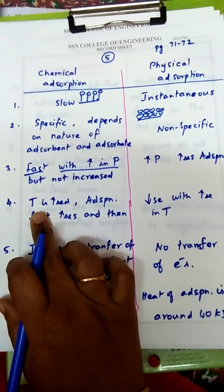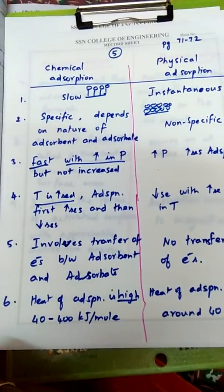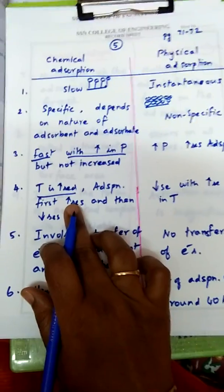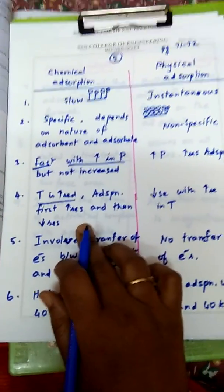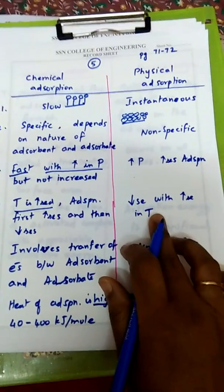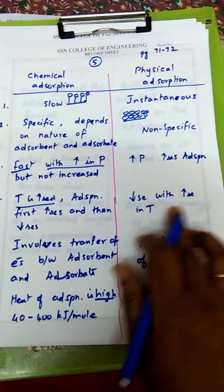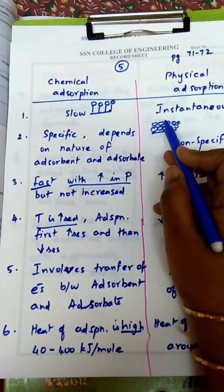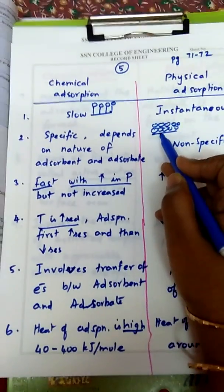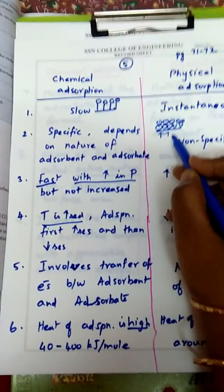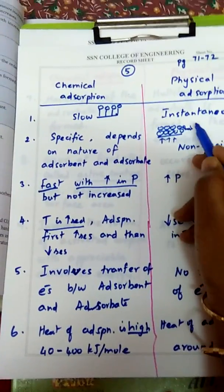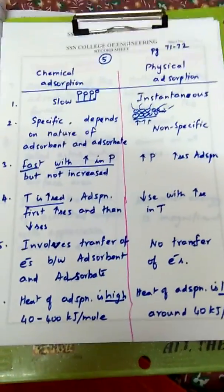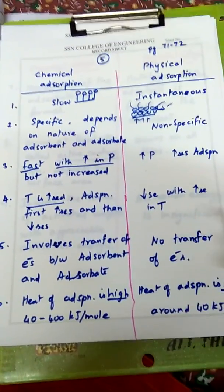The fourth point is the effect of temperature. In chemical adsorption, when temperature is increased, adsorption first increases and then decreases. Whereas in physical adsorption, adsorption decreases with increase in temperature. Imagine molecules clinging onto the adsorbent — when heated, the Van der Waals forces break up and the molecules are free to move away from the adsorbent. So physical adsorption decreases with increase in temperature.